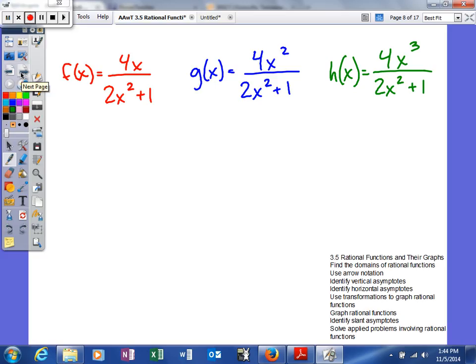So here are a couple examples. First of all, we'll look at f of x. If you look at the numerator, the numerator has a degree of one, and the denominator has a degree of two. So the denominator has a higher degree. Anytime that's the case, your horizontal asymptote is going to be the equation y equals zero.